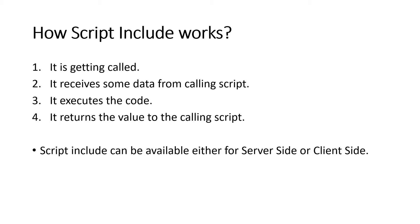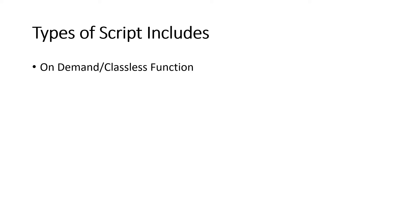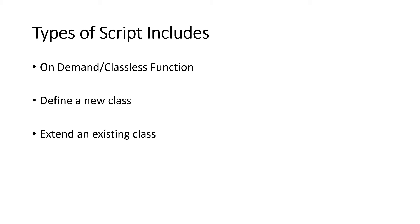There are three types of Script Include. The first is the on-demand or classless function, where you define a function that gets called from server-side scripting only — you cannot call it from a client script or UI policy. The second, and most popular, is defining a new class. You create a Script Include by defining a class, and the benefit is that it can be called from both the server side and the client side.